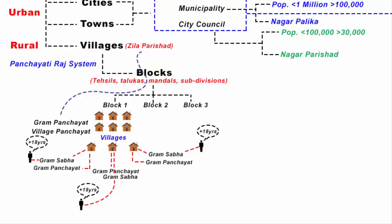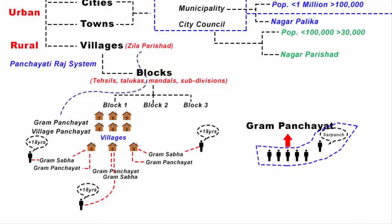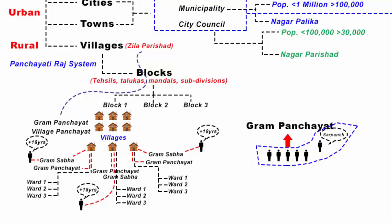Every village has a Gram Panchayat, which is the rural local self-government. The Panchayat consists of 5 members — 'Panch' means 5 members — who have the executive authority to take decisions for village development. A village is subdivided into wards; at an average, a village has around 7 to 17 wards. Each ward elects a representative called a ward member or Panch, chosen by the local people. The president or head of the Gram Panchayat is the Sarpanch, elected by the ward members amongst themselves.